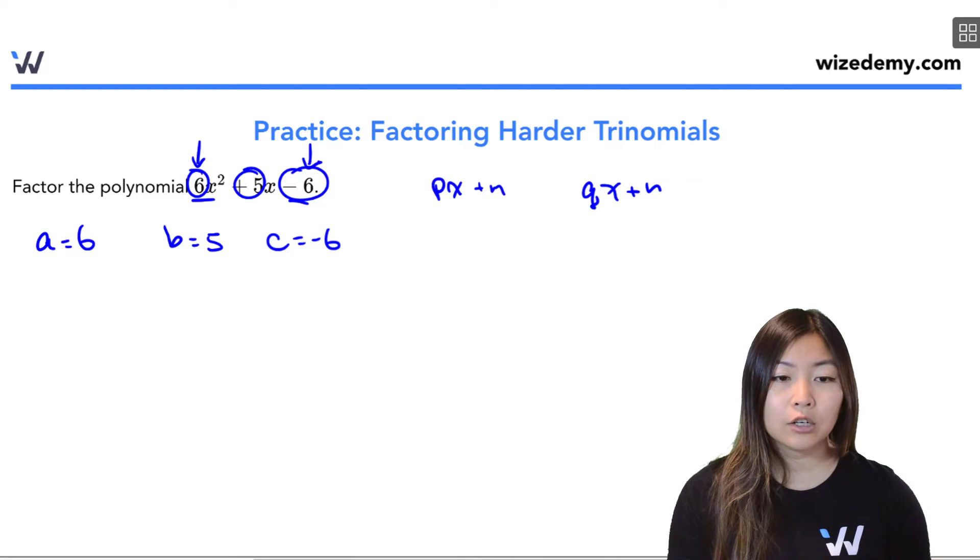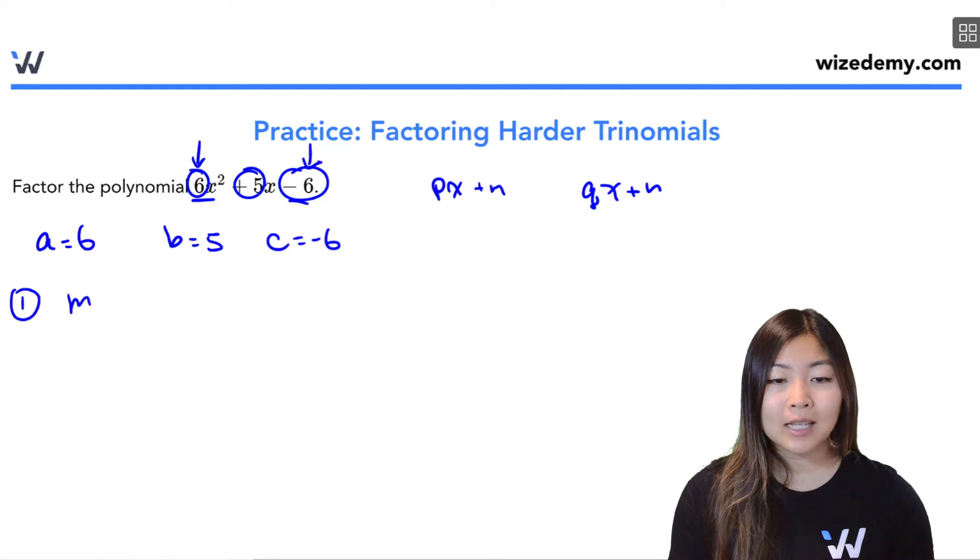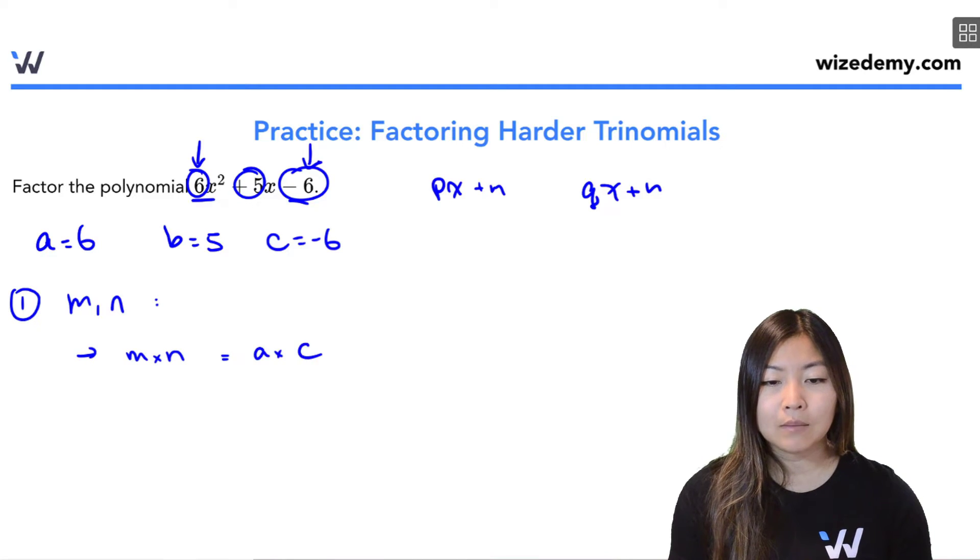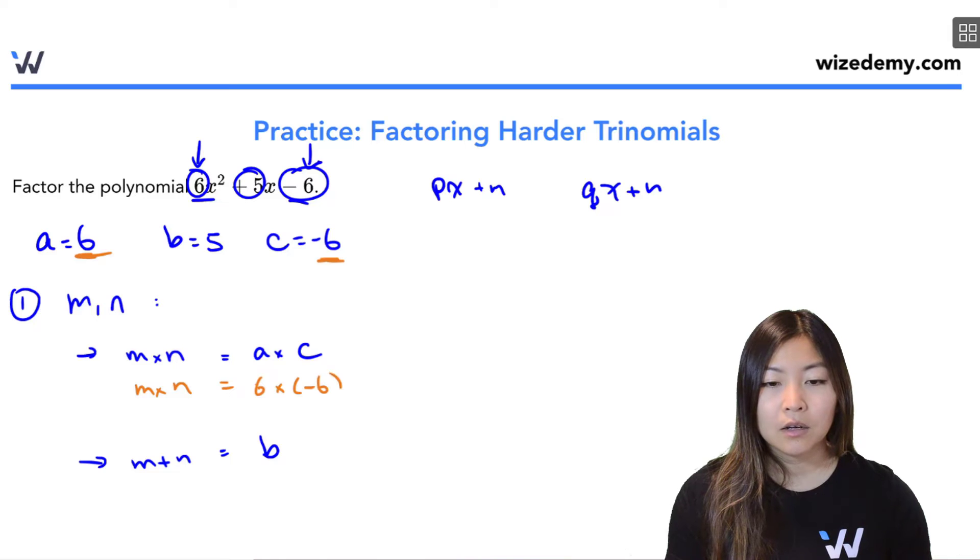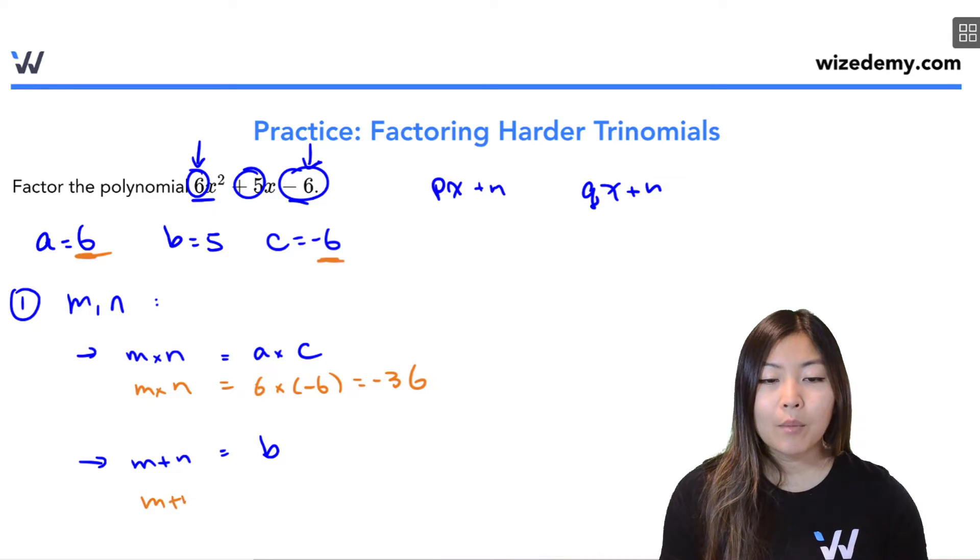So now I could write out my first step, which is I need to find two numbers, m and n, such that m times n is a times c, and m plus n is b. So that means that m times n has to equal 6 times negative 6, which is negative 36, and m plus n has to equal b, which is 5.